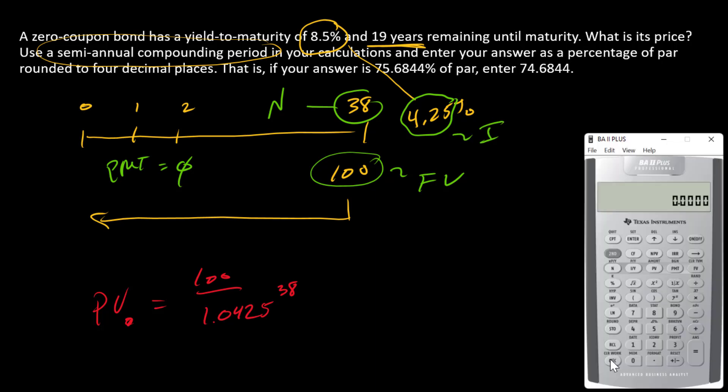I'll just use this red formula here and key it in. So 100 divided by 1.0425 raised to the 38th power and my price.